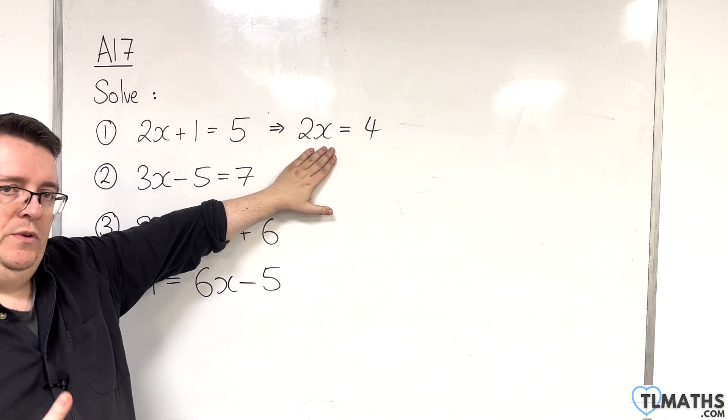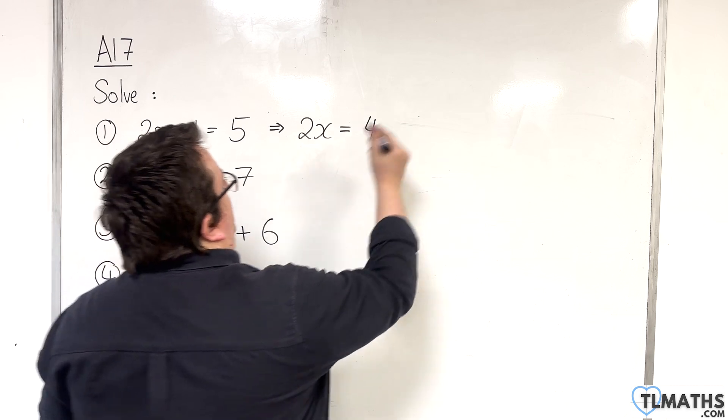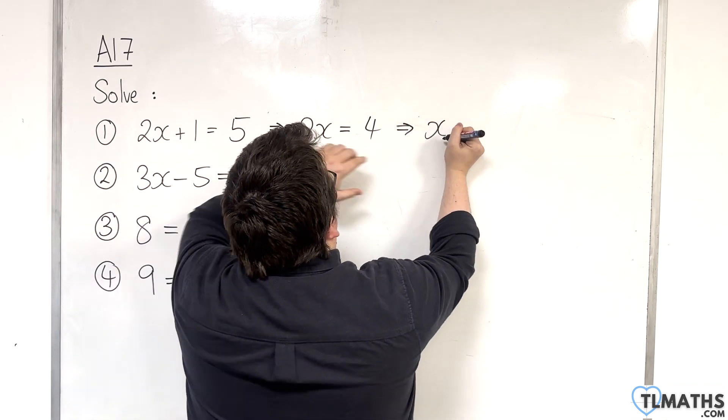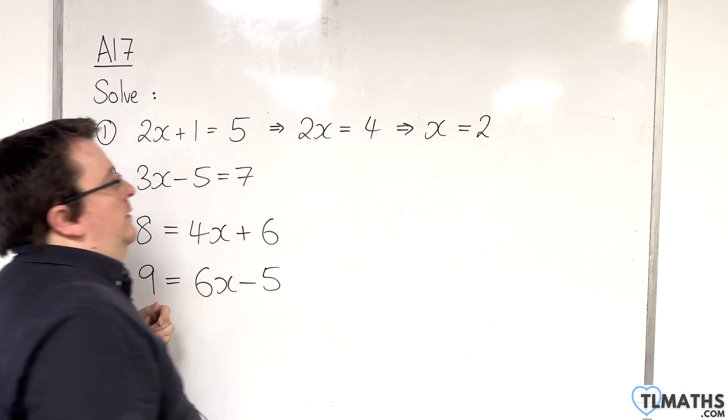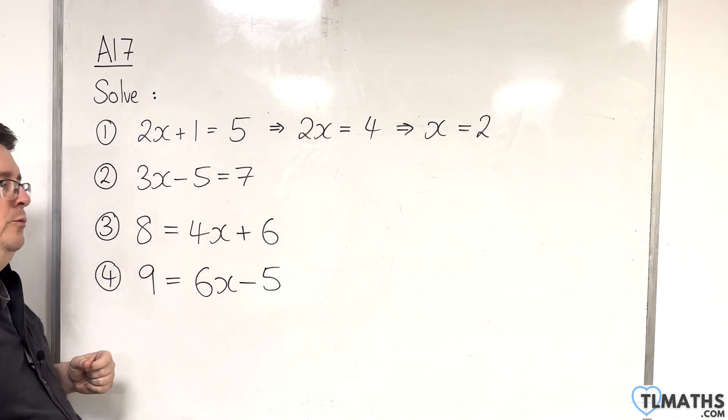Now we're at this stage, we deal with the multiplication. We're multiplying x by 2, so we divide both sides by 2. 2x divided by 2 is x, 4 divided by 2 is 2. OK. So, we deal with the addition and subtraction first, then the multiplication division.